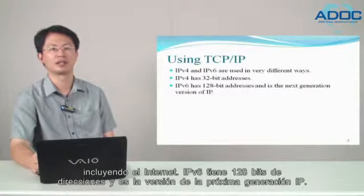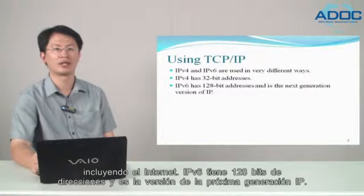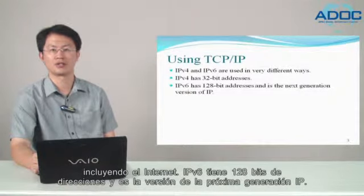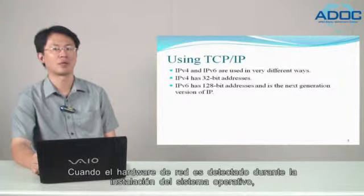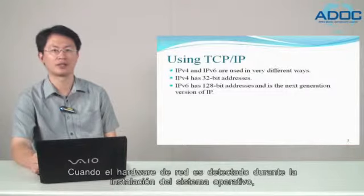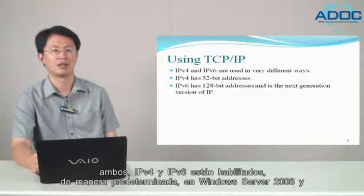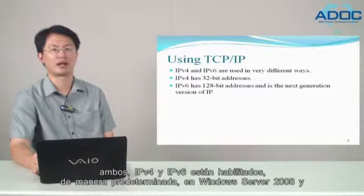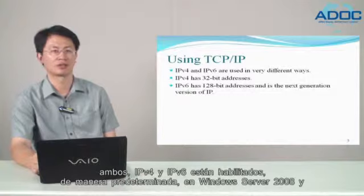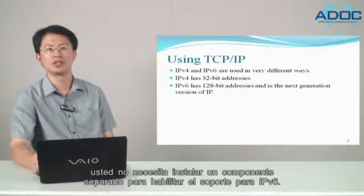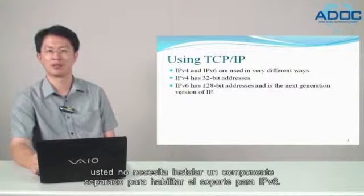IPv6 has 128-bit addresses and is the next generation version of IP. When networking hardware is detected during installation of the operating system, both IPv4 and IPv6 are enabled by default in Windows Server 2008, and you don't need to install separate components to enable support for IPv6.